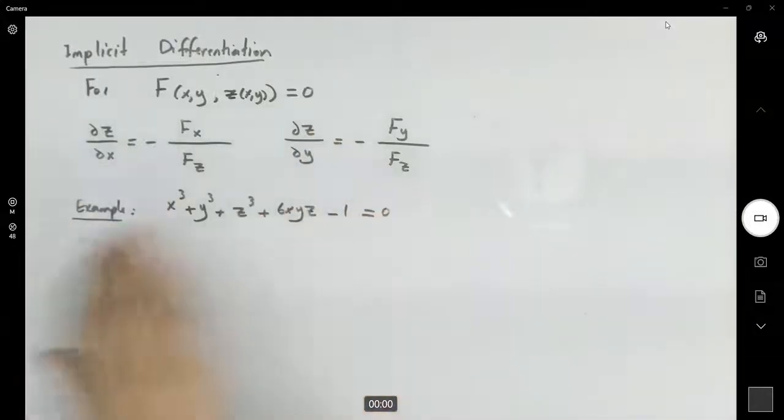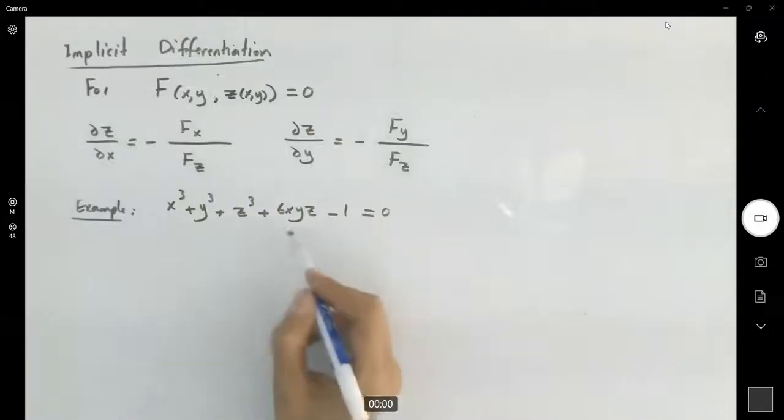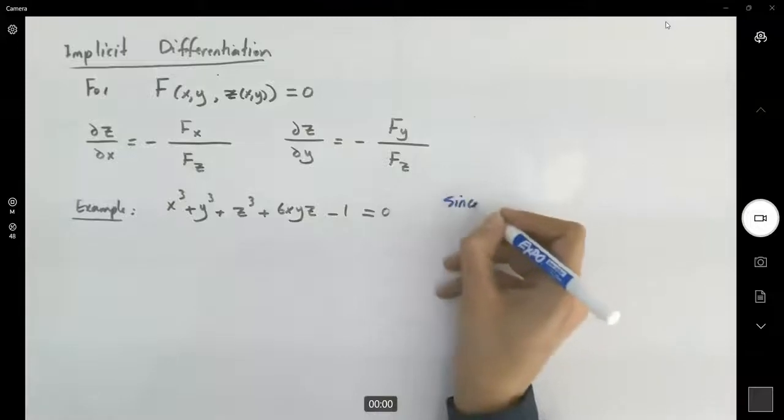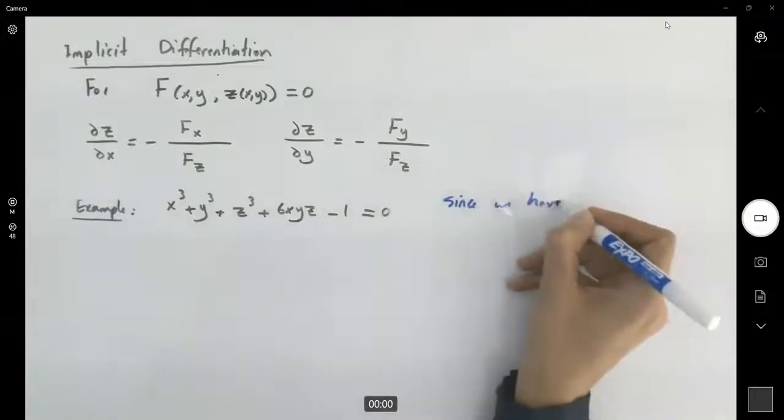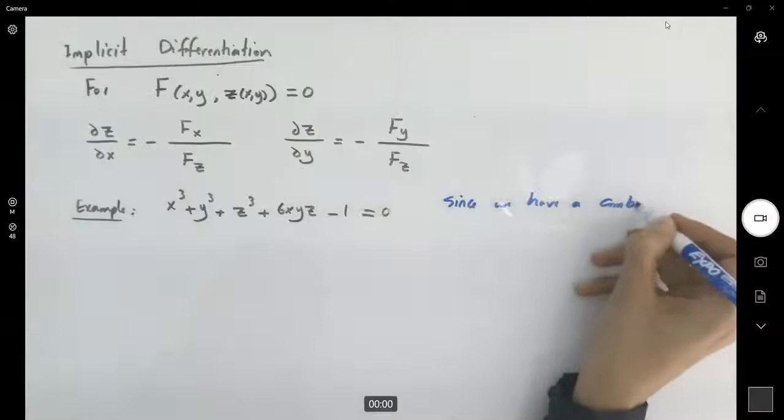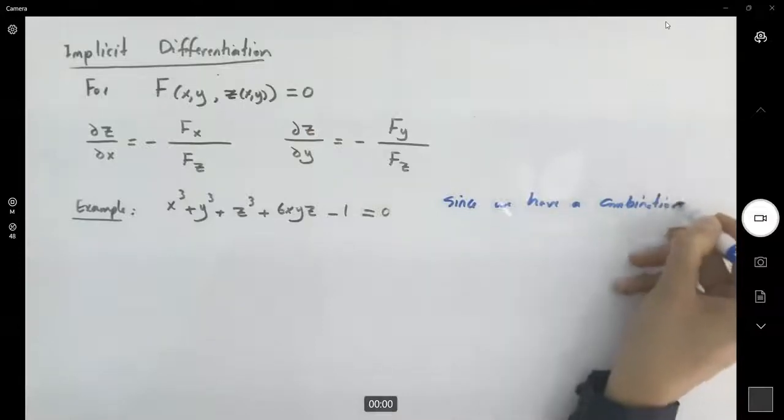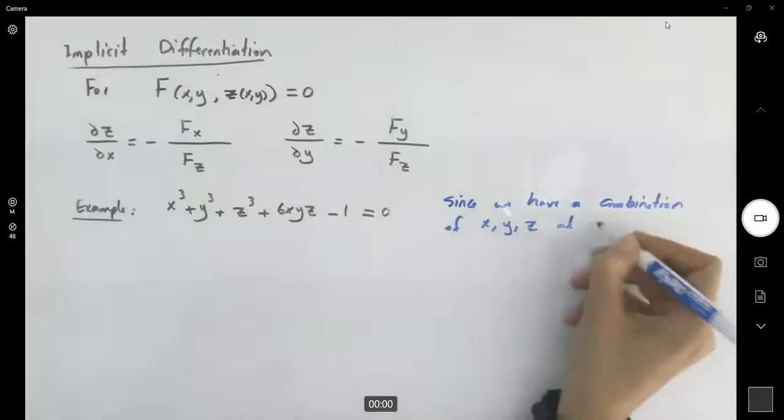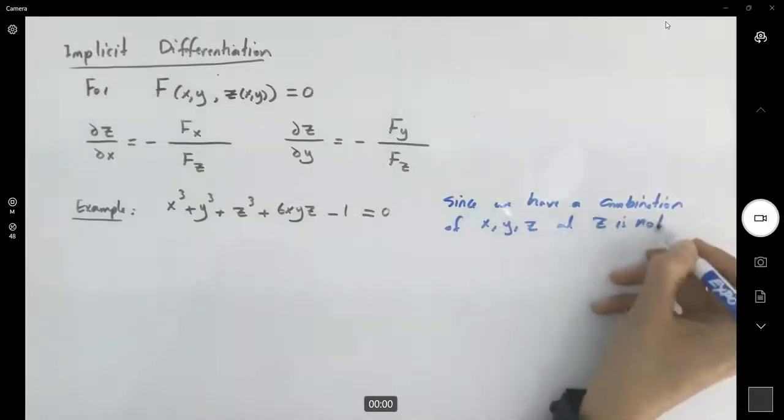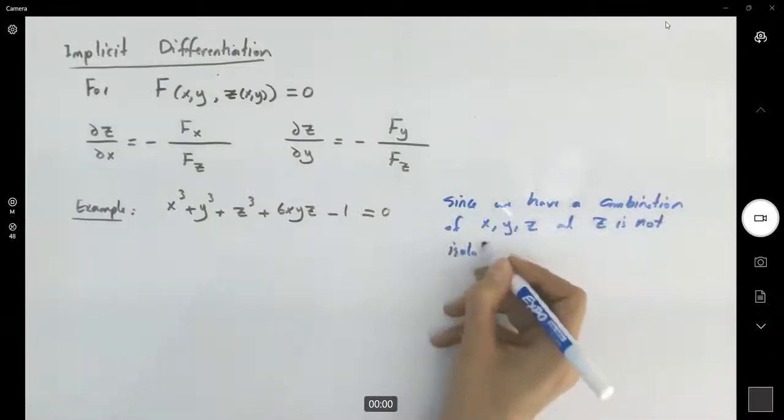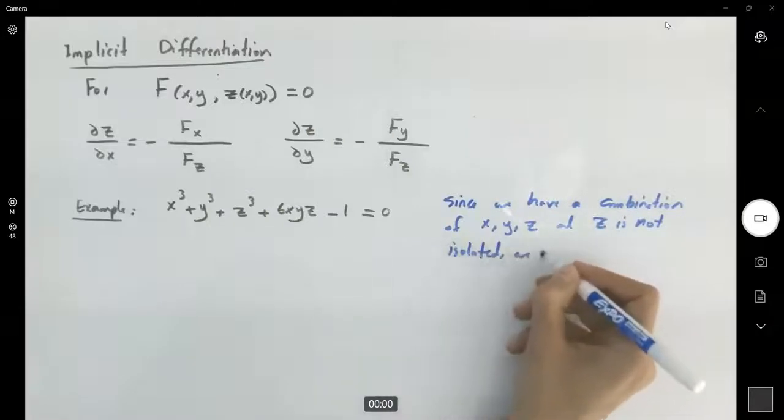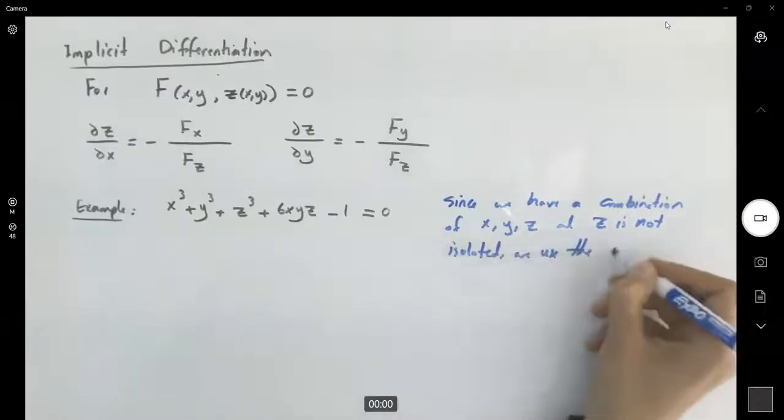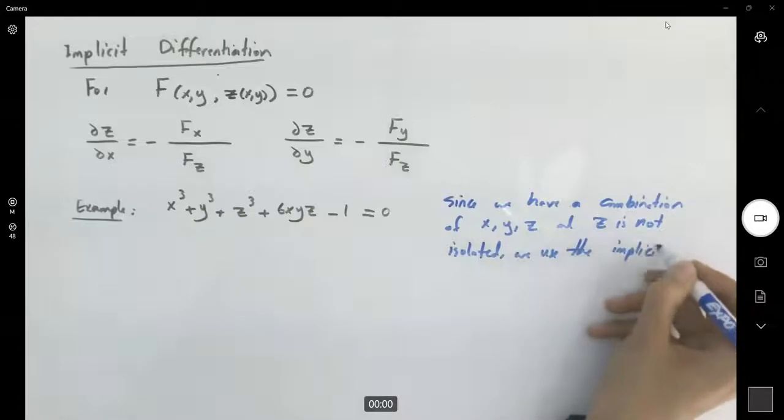So, since there is a combination of x, y, and z, and you cannot isolate z on one side, since we have a combination of x, y, and z, and z is not isolated, we use the implicit differentiation.